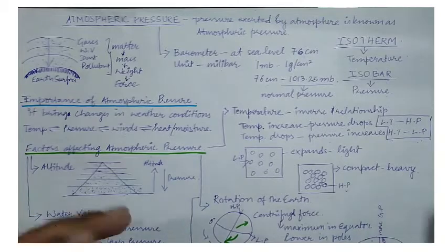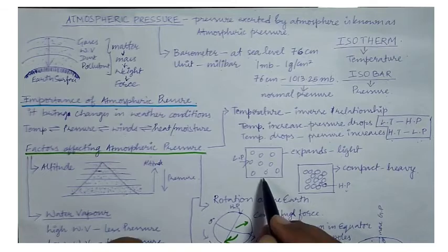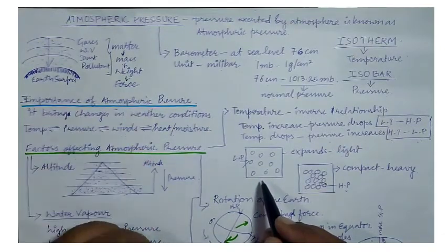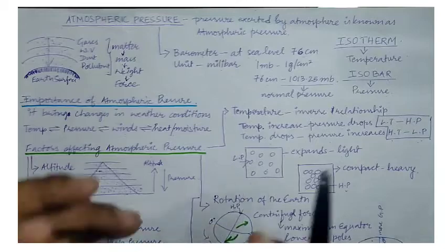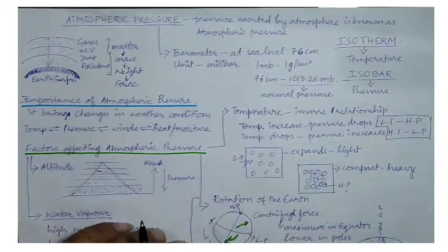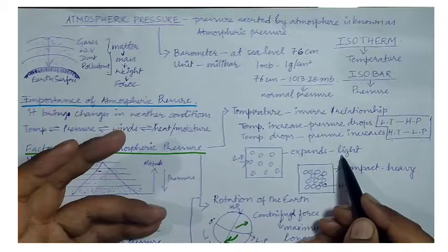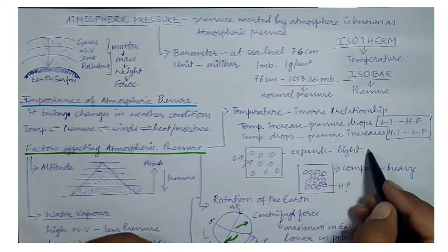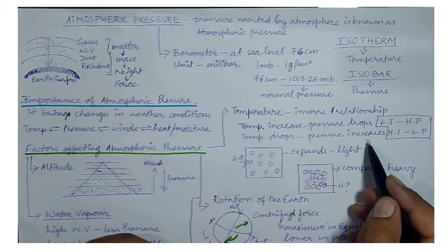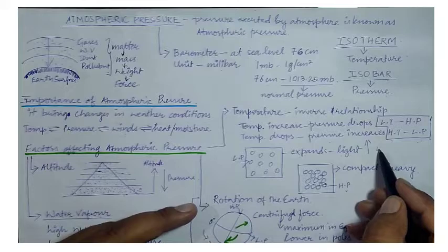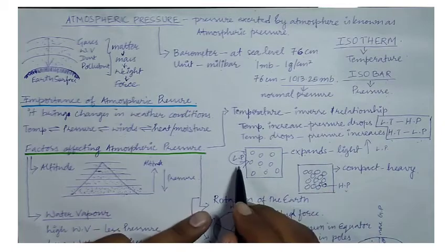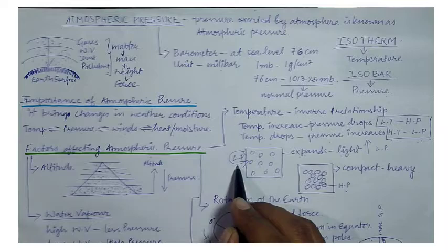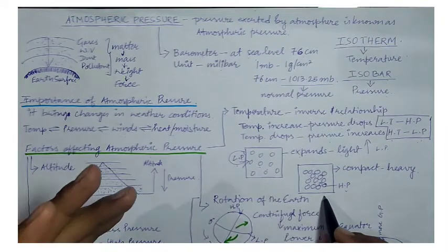Why does this happen? When temperature is very high, the molecules of matter present in the atmosphere get heated up and start expanding, creating more space. When the air expands, it becomes light and starts rising upward. Whenever there is rising air, the pressure condition will always be low. So when temperature is high and molecules are expanding, the pressure in that area will be low.